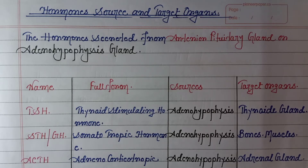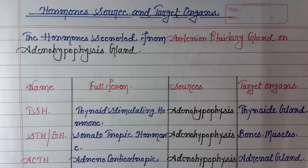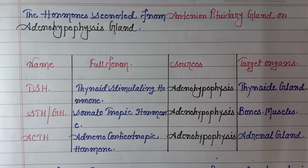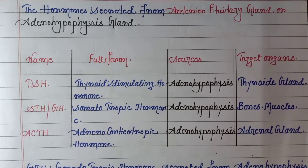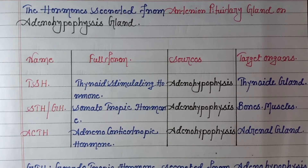First, I am going to talk about the hormones secreted from the anterior pituitary gland, or the adenohypophysis gland. First is the TSH hormone. TSH stands for thyroid stimulating hormone, it is secreted from the adenohypophysis, and the target organ of TSH is the thyroid gland.